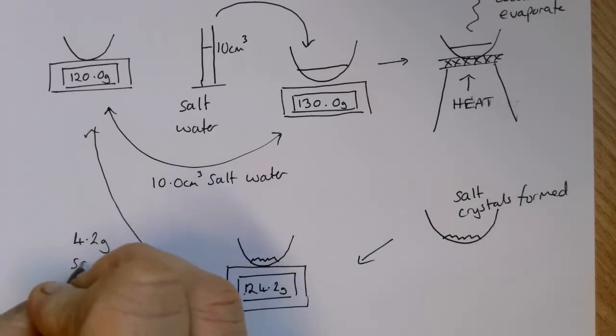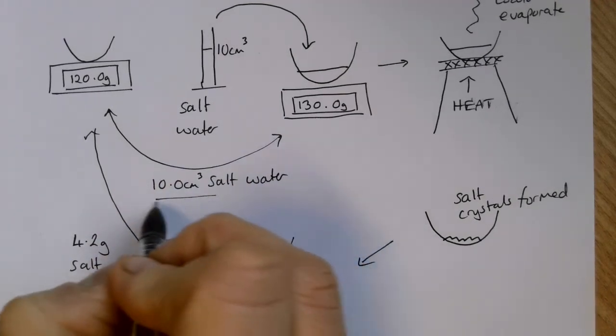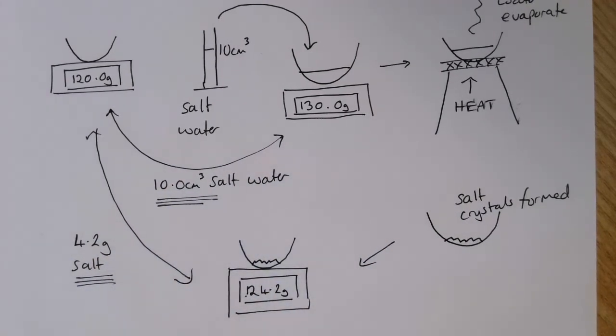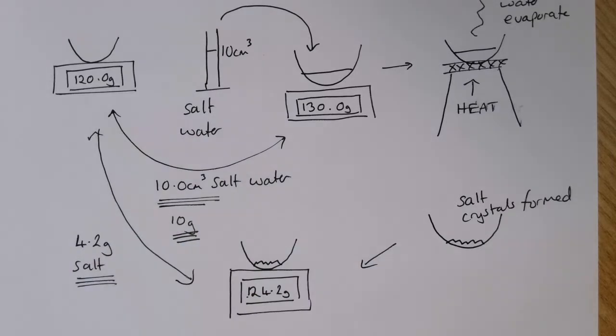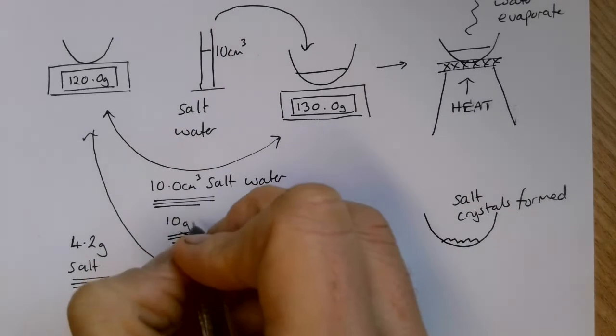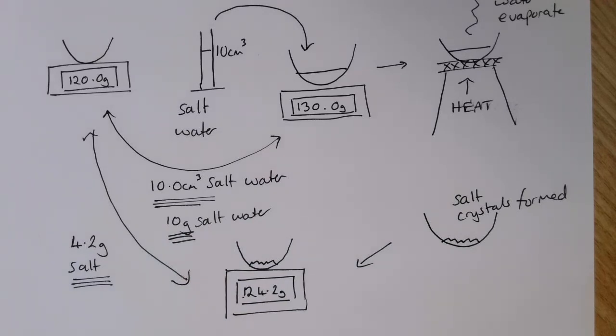The difference between the empty crucible mass and this mass tells us 124.2 minus 120.0 gives us 4.2 grams of salt. We've got our two pieces of information now. We've worked out that we've got 10 grams of salt water, and within that we've got 4.2 grams of salt. We're then in a position to be able to carry out a calculation.